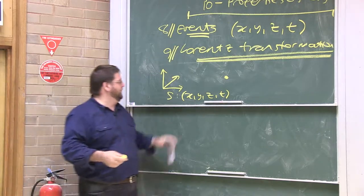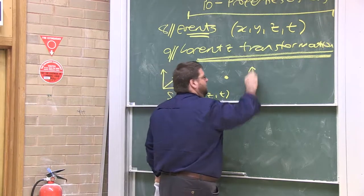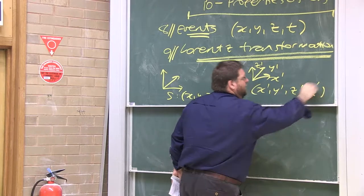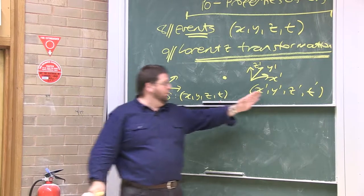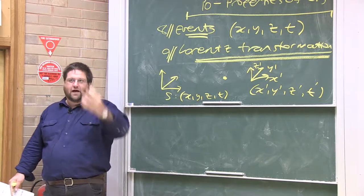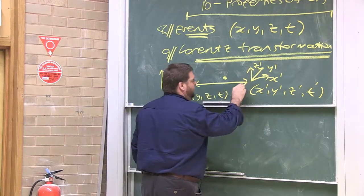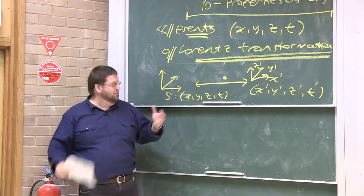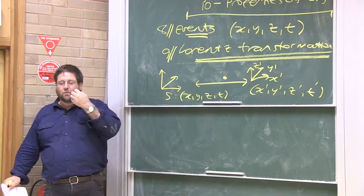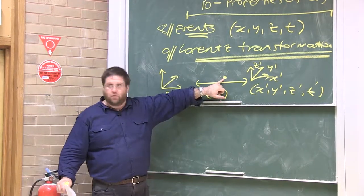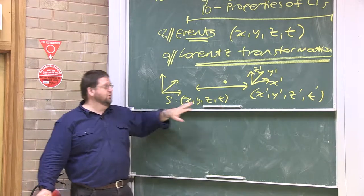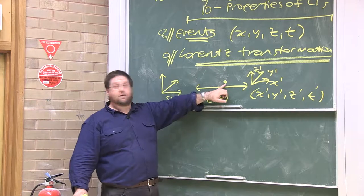We're going to restrict ourselves to inertial coordinate frames. Suppose you had some other frame of reference — x prime, y prime, z prime, and t prime. According to that frame, there will be different space-time coordinates for that point. Since there's no absolute frame of reference, relativity is intimately concerned with how to transform from one description of nature according to one non-privileged frame to a different non-privileged frame. The Lorentz transformations are going to tell us how to transform events.